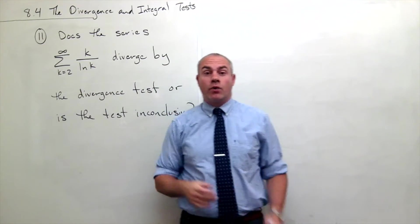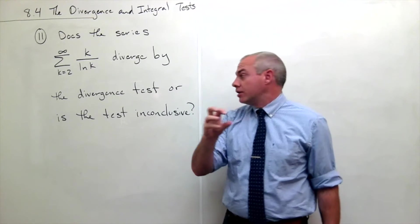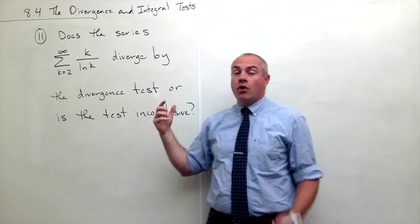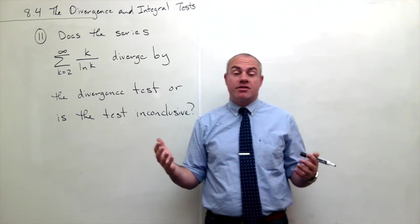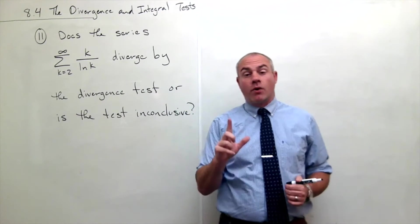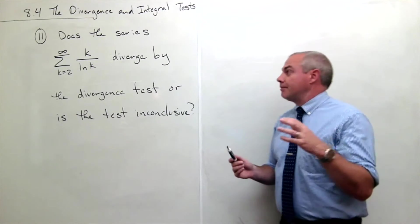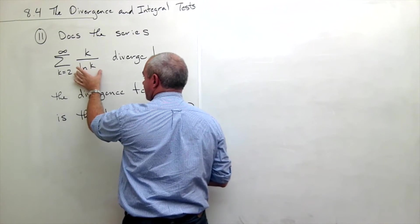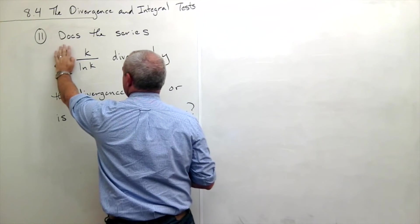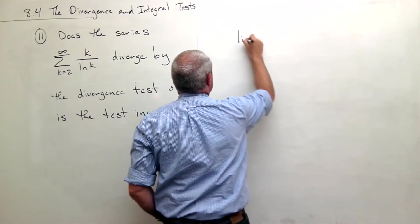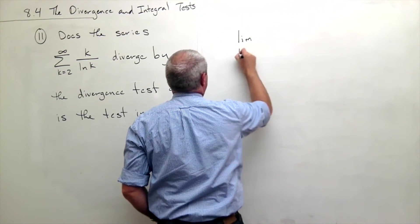Either we're going to get a limit of zero—in which case the test is inconclusive—or we get a limit of something else, in which case the series diverges. What I mean by testing the limit is: I take the limit of the sequence, not the series. So what I want to look at in the divergence test is the limit as k goes to infinity of